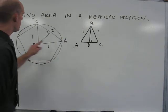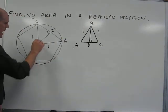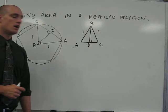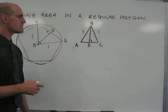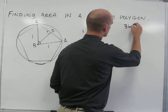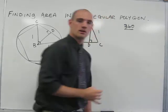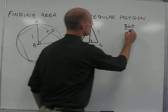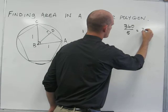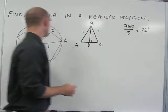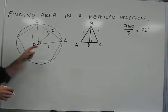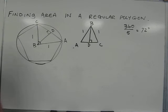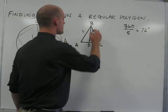We need to find what the measure of this angle is here, and because it's a central angle of this pentagon, we can simply divide the number of degrees around the central angle by the number of central angles there are, five, to get 72 degrees. So the measure of this central angle is 72 degrees, meaning that one-half of it would be 36 degrees.